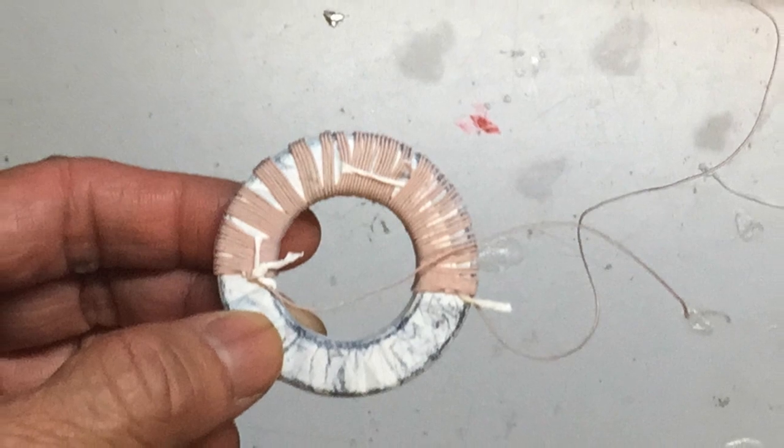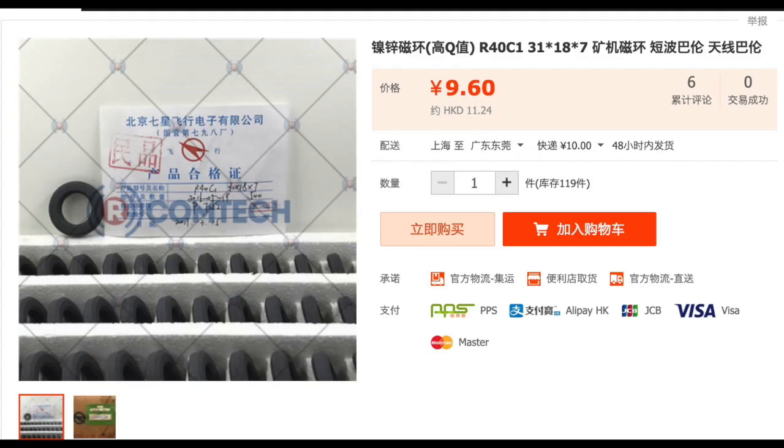This is the turret coil. There are some special materials called R40C1 that is manufactured in China that can create very high quality turret coil with high Q factor as high as 1000. One of the hobbyists in the US is also putting this on sale on eBay. I've put the link in the description you can check it out.